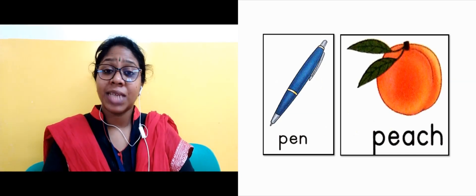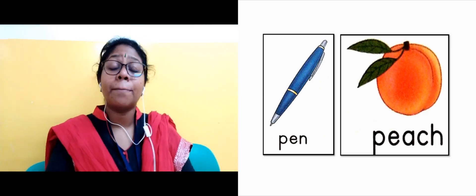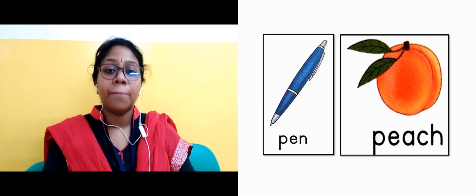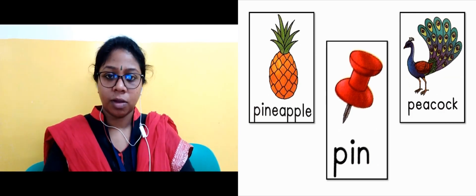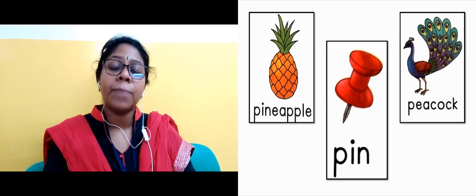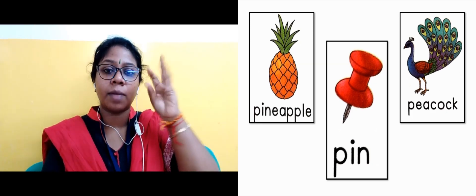In the next slide, our first image is pen. P sounds P, pen, pen. The next image is peach, it's a fruit. Peach. And in the next slide it's pineapple, pineapple.